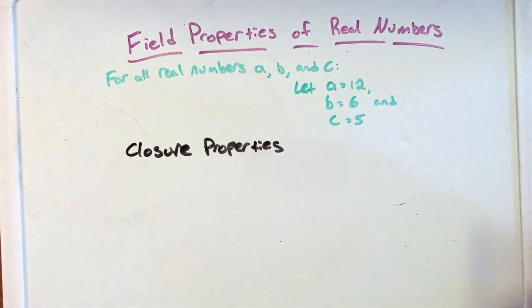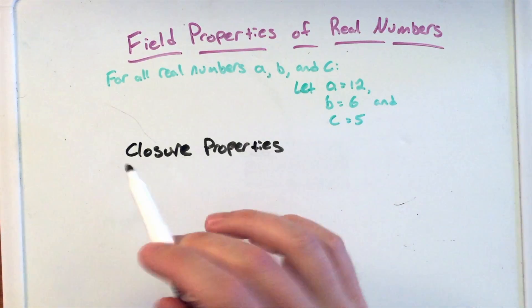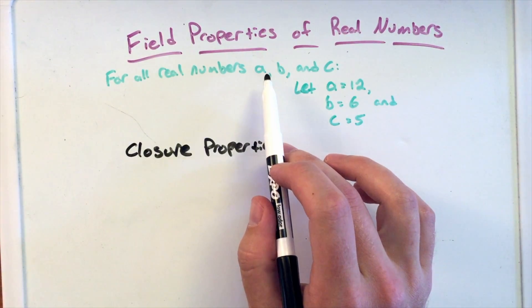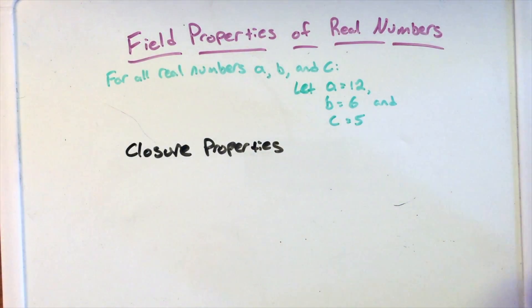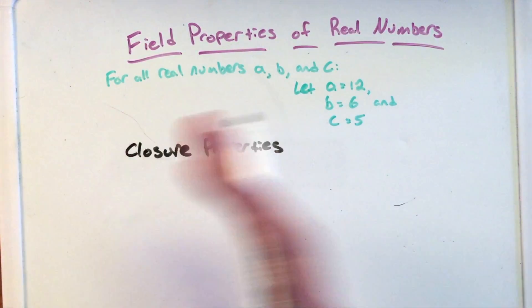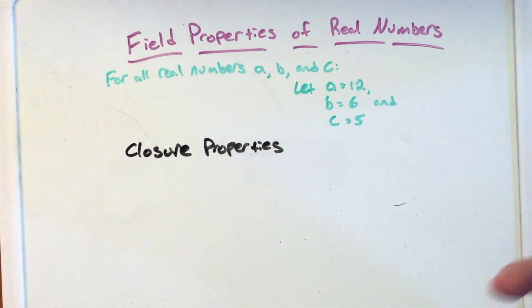So here we're going to talk about the field properties of real numbers. For all real numbers, we're going to say for all real numbers a, b, and c. So a, b, and c can be any real number. For our examples on the left and right here, the left will be the letters, right will be examples of real numbers where a equals 12, b equals 6, and c equals 5, showing that these properties apply.